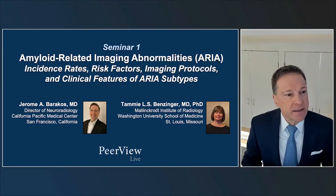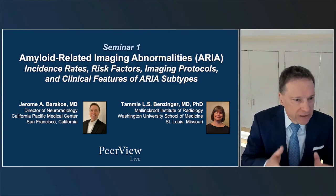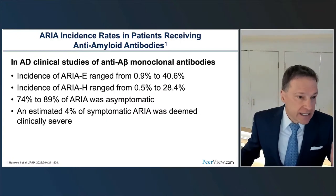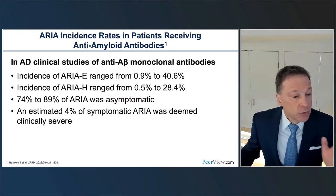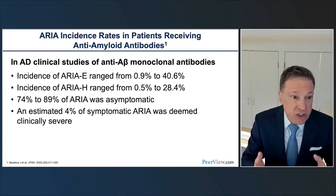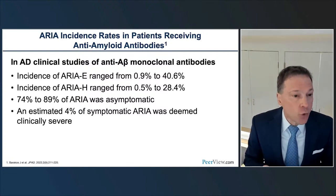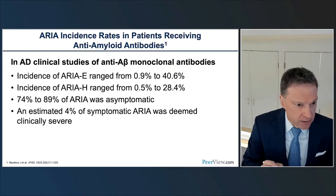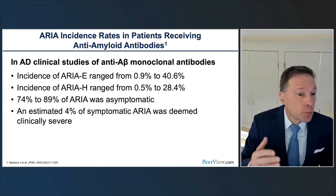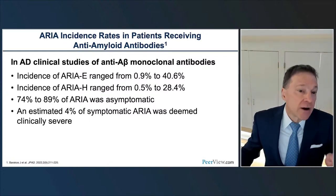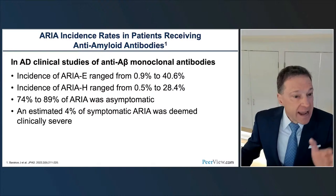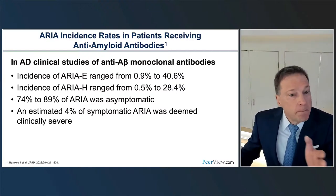When we look at the incidence of these amyloid-related imaging changes, they vary with different monoclonal antibodies. We have ARIA-E and ARIA-H. E refers to the edematous form, where there's edema in the brain tissue or leptomeningeal effusions. The H form refers to the hemosiderin aspect of these potential changes, manifesting as lobar microhemorrhages or superficial leptomeningeal siderosis. The incidence for ARIA-E can range from as low as 1% to up to 40% of patients receiving these agents. The ARIA-H form can range from about 1% to about 28%.